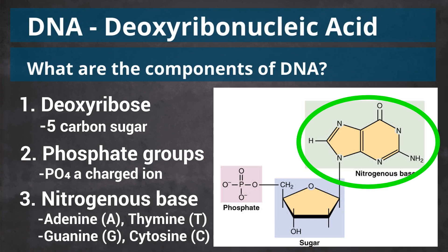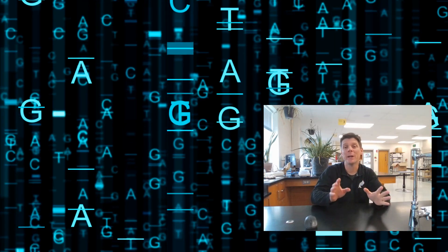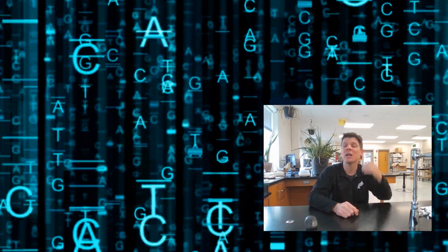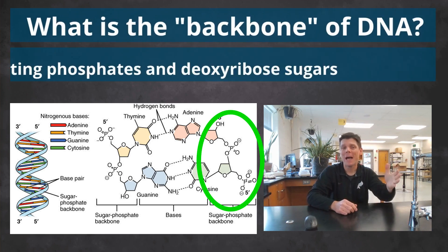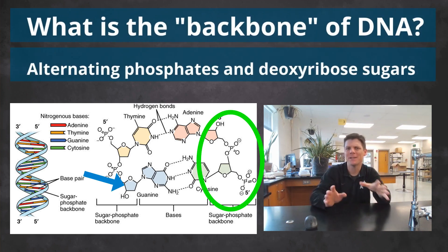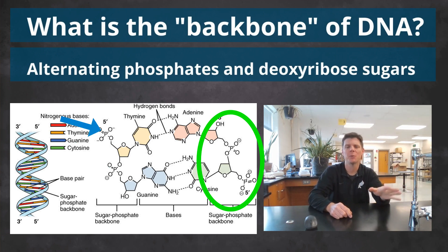Nucleotides also have one nitrogen base: adenine, thymine, guanine, or cytosine — but we usually just say A, T, G, or C. The written language of molecular biology is actually the order of these nitrogen bases in DNA molecules. The backbone, or the sides, of a DNA double helix include alternating deoxyribose sugar and phosphate groups.